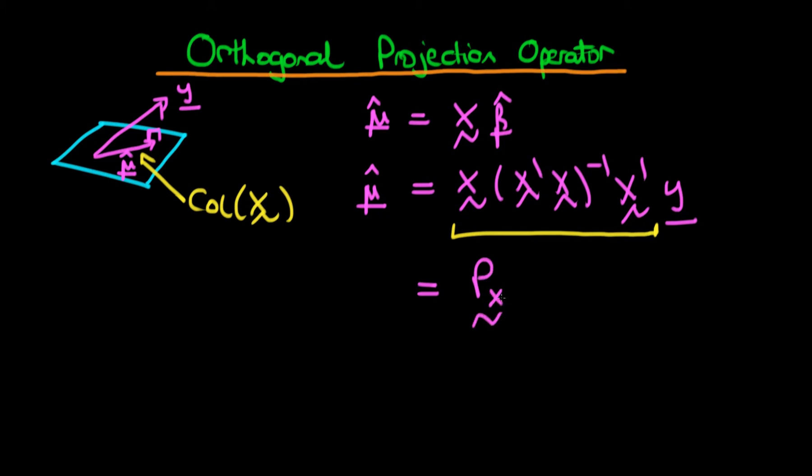So we call that orthogonal projection operator P_X and we just let it operate on y. From the logic which we've used thus far, we can identify that P_X is actually equal to X times X prime X to the power minus 1 times X prime.